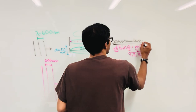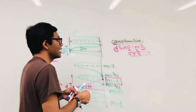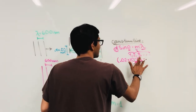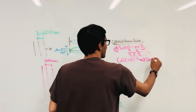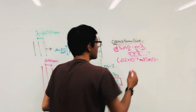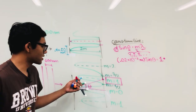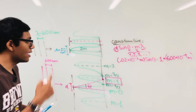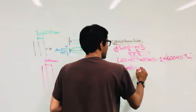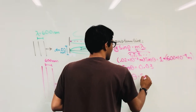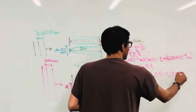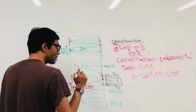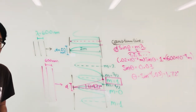To find the first constructive interference fringe, set M=1. Plugging in: D is 0.02×10⁻³ meters, M=1, and λ is 600×10⁻⁹ meters. Solving for sinθ gives 0.03. Taking the arc sine of 0.03, we get θ = 1.72 degrees. That means the angle between the center of the detector and the M=1 constructive interference pattern is 1.72 degrees.